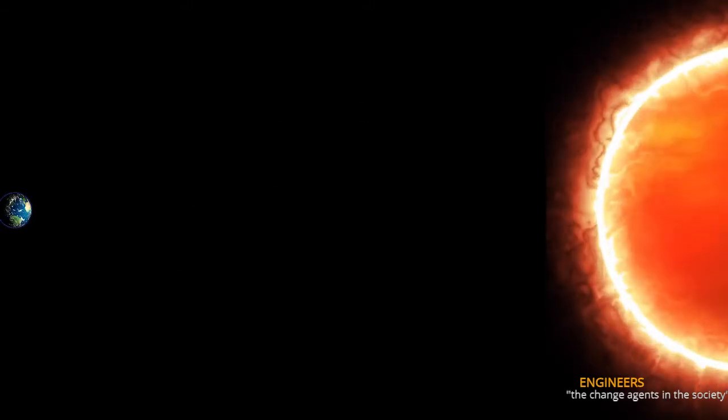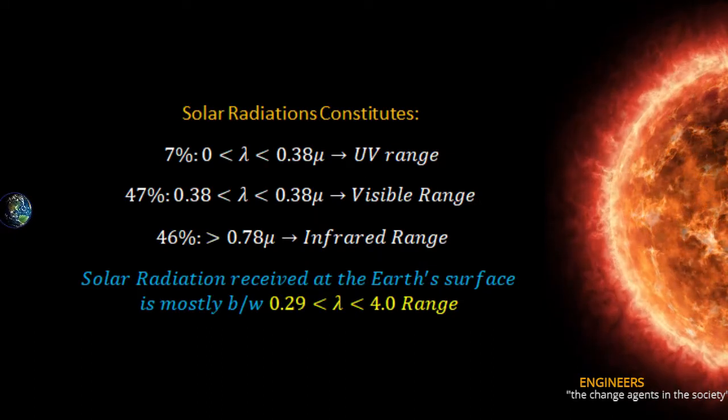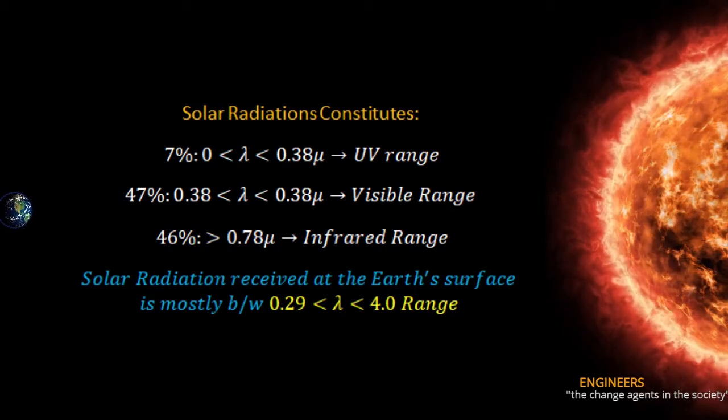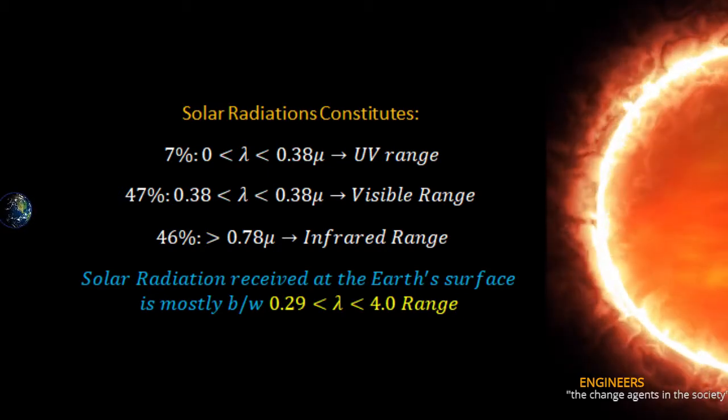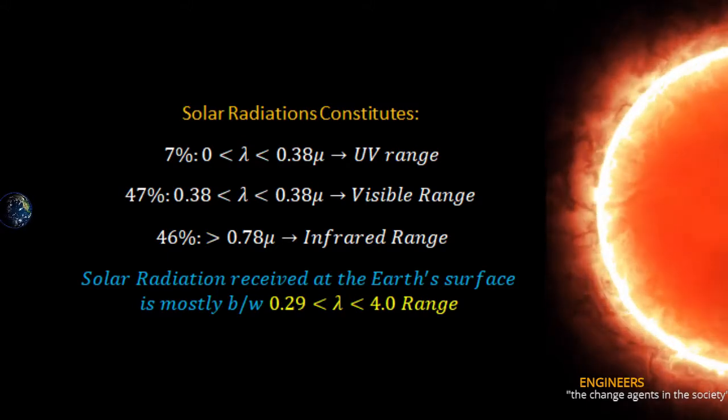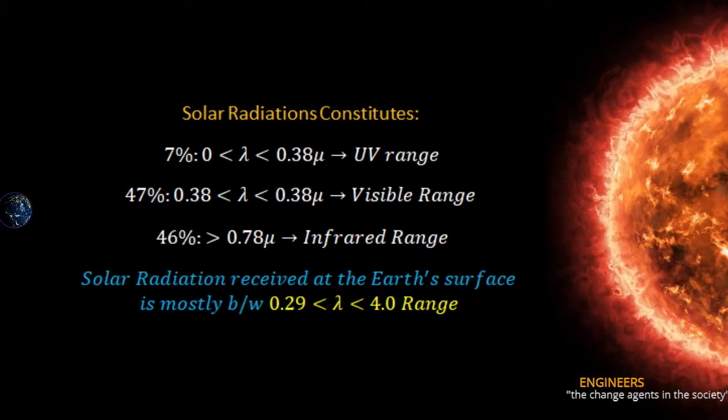Further, the solar radiation approximately contains 7 percent in the range of greater than 0 and less than 0.38 microns, which we call the ultraviolet range. 47 percent falls in the range of greater than 0.38 and less than 0.78 microns, which is the visible range.